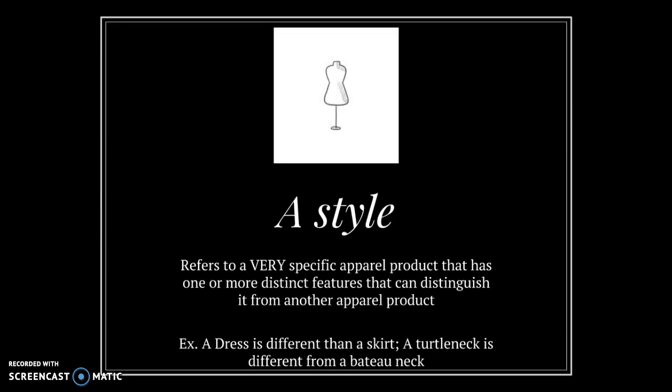First, we'll start with style. A style refers to a very specific apparel product. Garment styles include dresses, shirts, skirts, pants, jackets, and coats. A style has one or more distinct features that distinguish it from another apparel product — for example, a dress is different from a skirt, and a turtleneck is different from a bateau neck. Some garment style names are linked to the past: the word 'coat' comes from the English word 'cloak,' and 'jacket' is derived from the old French word meaning 'little coat.'